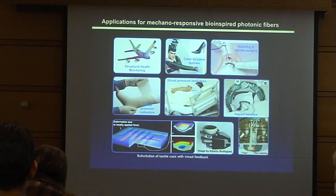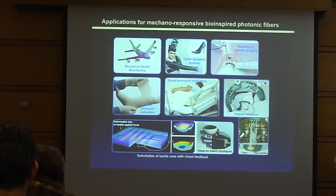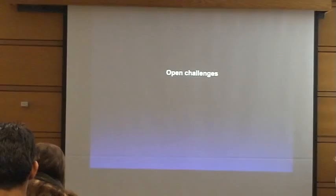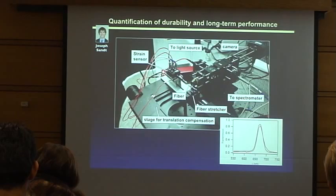The shortcoming at this stage is that we only make these fibers in short lengths, which limits practical applications. Current challenges include demonstrating durability. A student has just finished building a setup for mechanical testing of fibers — essentially a tensile testing machine that can stretch fibers while measuring the stress — to run thousands or tens of thousands of cycles to assess how durable and repeatable the response is.